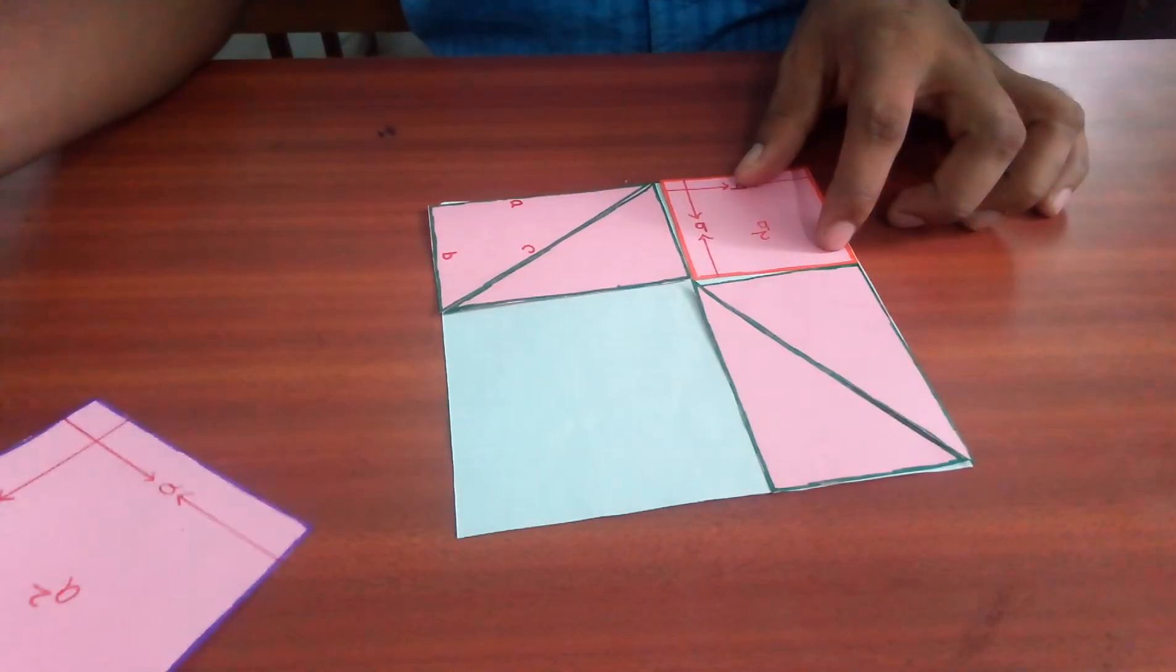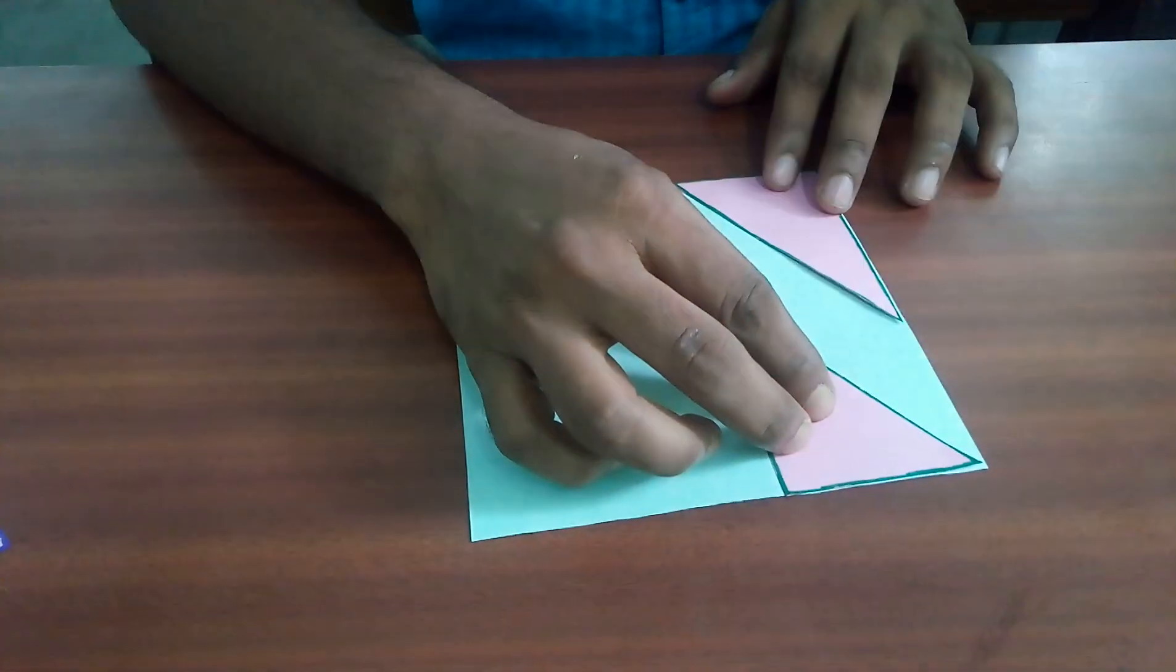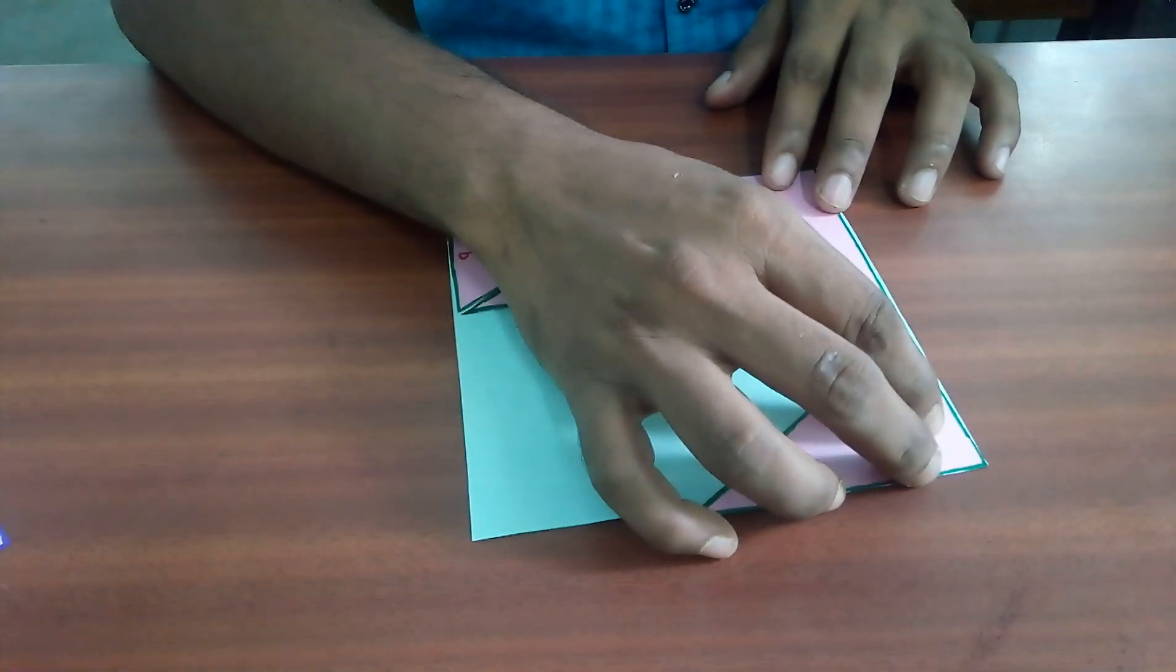Now, we will remove the square of side A unit and side B unit and we will rearrange these four triangles in this way.